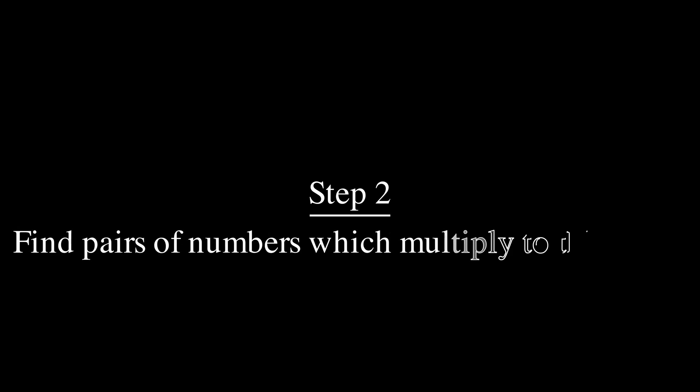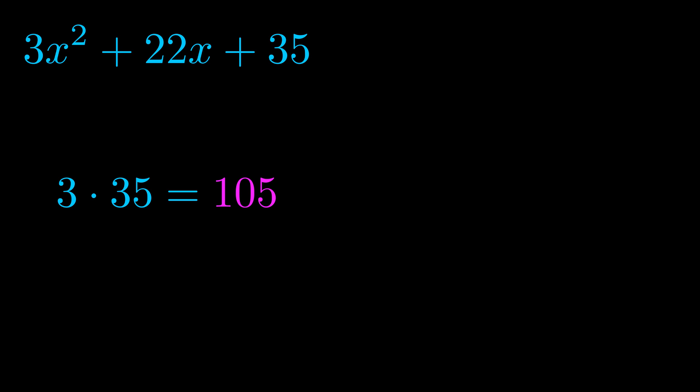Step two is to try to find all of the pairs which multiply to this number. Now it turns out you don't really need to find all of them but go ahead and write down as many numbers as you can that multiply to the magenta value for now. Pause the video and resume when you're ready to continue.